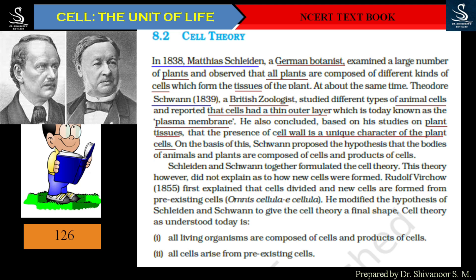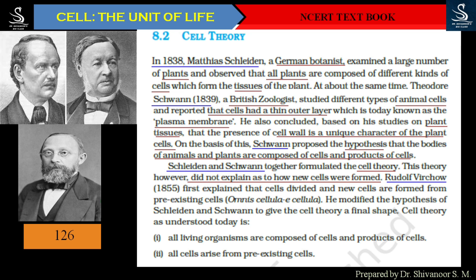On the basis of his study, Schwann proposed the hypothesis that the bodies of animals and plants are composed of cells and products of cells. Together, Schleiden and Schwann formulated the cell theory, but the cell theory did not explain how new cells are formed — from where new cells come from. Then in the year 1855, Rudolf Virchow explained that cells divide and new cells are formed from pre-existing cells. In his own words: 'Omnis cellula e cellula.' Remember that point. He then modified and completed the cell theory proposed by Schleiden and Schwann.